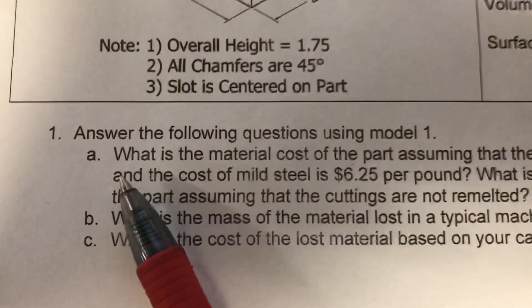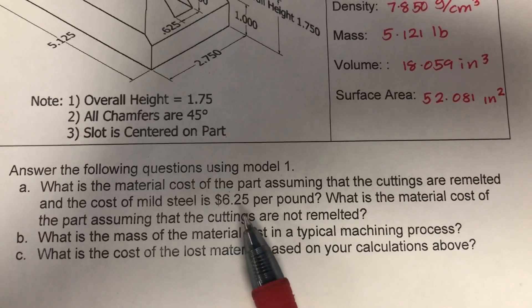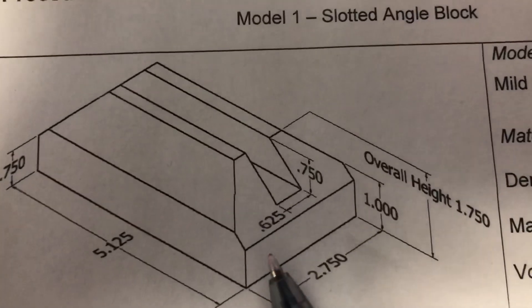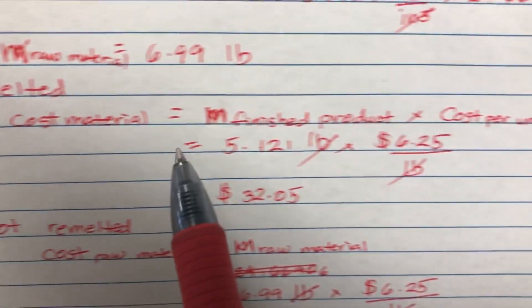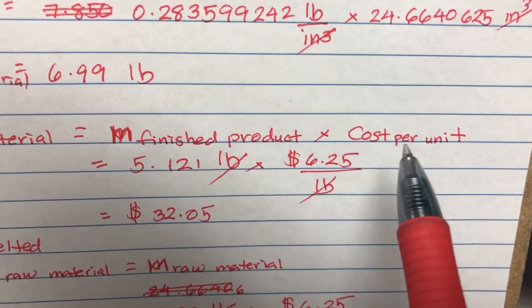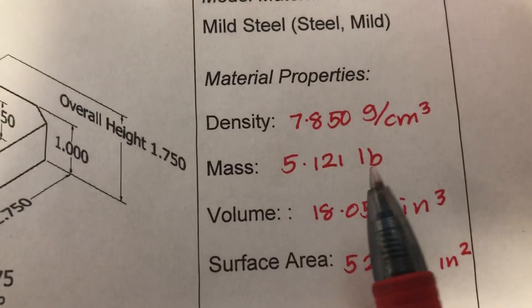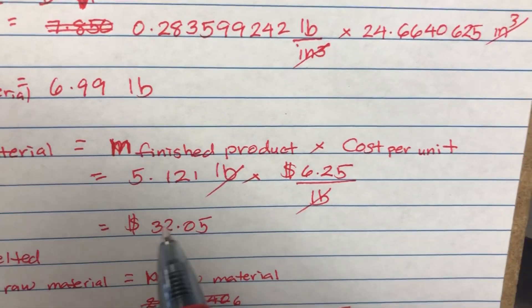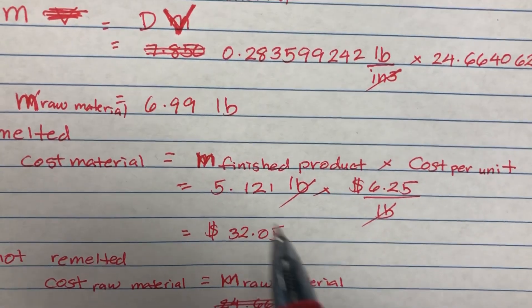Question 1A: What is the material cost of the part assuming that the cuttings are remelted and the cost of mild steel is $6.25 per pound? Since the shavings are remelted and nothing is wasted, you multiply the mass of the finished product by the cost per unit: 5.121 pounds times $6.25 equals $32.05. That is the total material cost when cuttings are recycled.